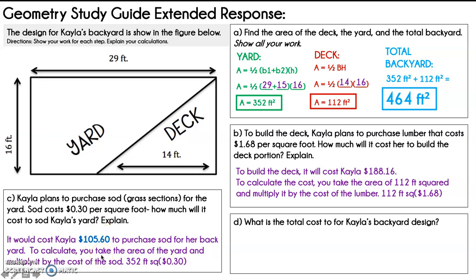Then I'm going to explain. It says, to calculate, you must take the area of the yard and multiply it by the cost of the sod. So we're taking 352 feet squared and we're timesing it by 30 cents per square foot. And that's how we got our $105.60.